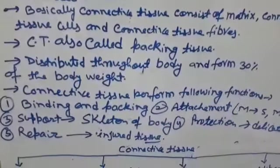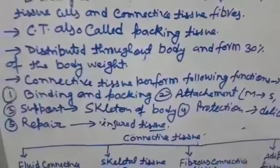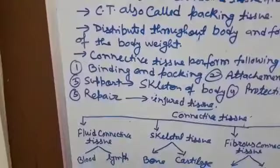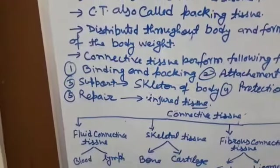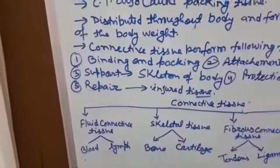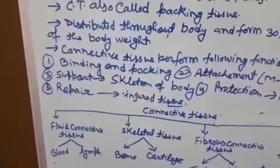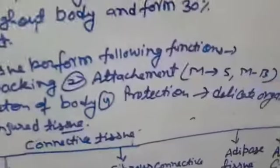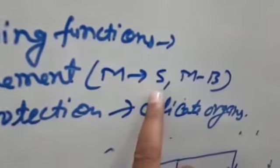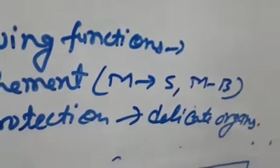The tissue performs the following functions in our body: binding and packaging. This binds organs to bones, packs organs, provides attachment of muscles to skin, and bones to attach.